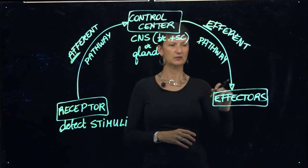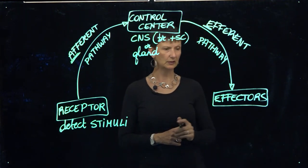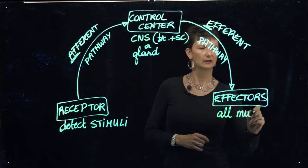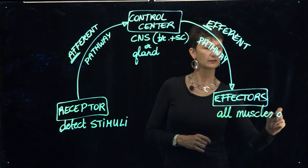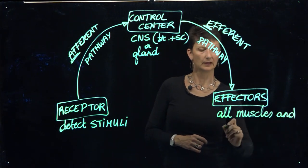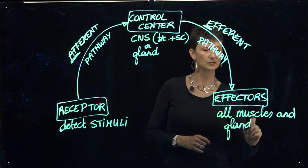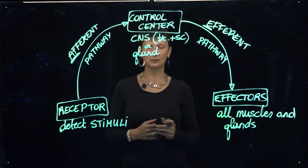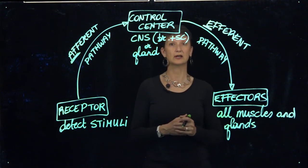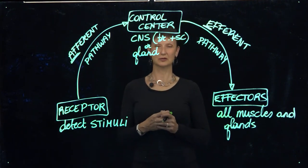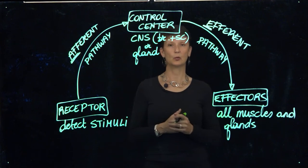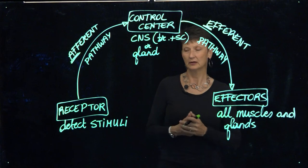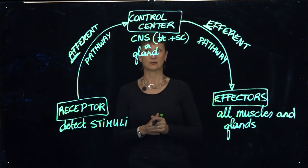These commands make it to the effectors. The effectors include all muscles in our body as well as all of our glands. When I say muscles, I'm not just talking about the muscles you use to pick up a table — not just your skeletal muscles. We're also talking about your heart muscle and the muscle that forms the walls of your hollow organs, like your bladder wall, stomach wall, esophagus wall, et cetera.